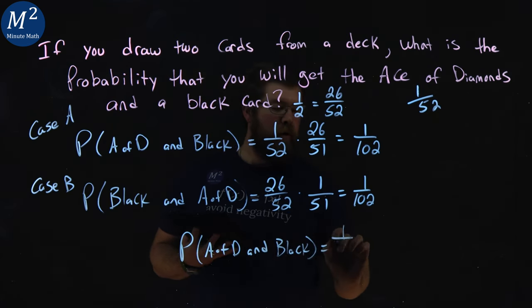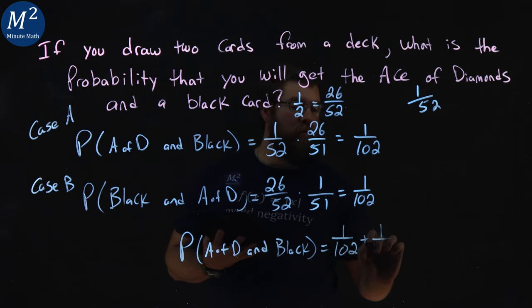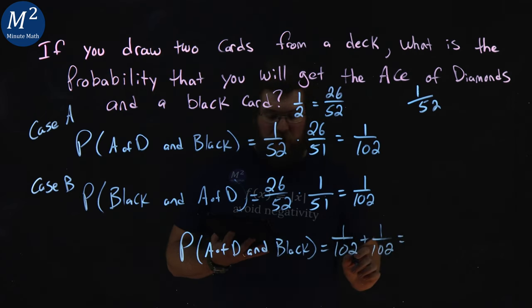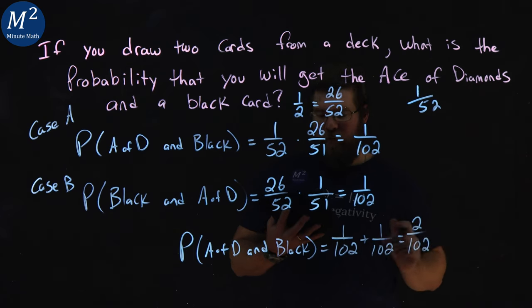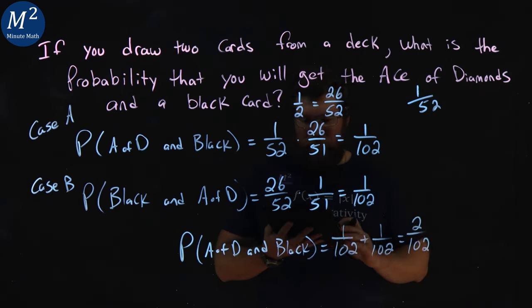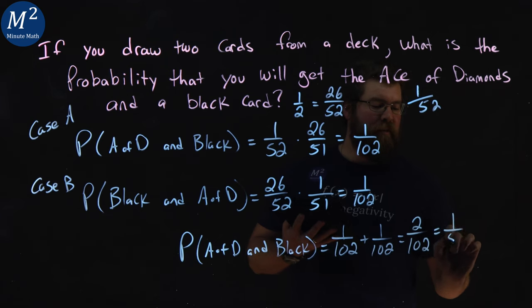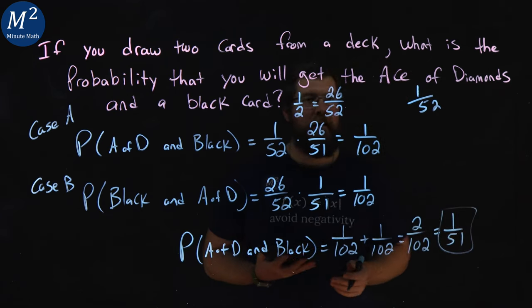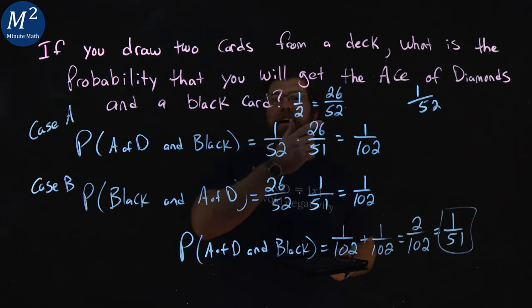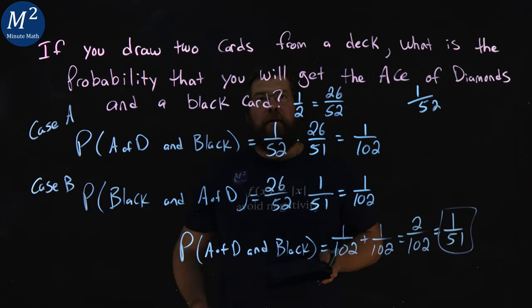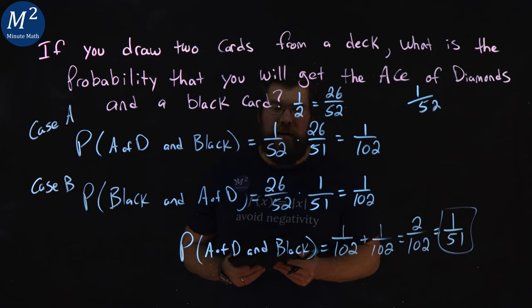is a 1 over 102 plus 1 over 102, which is 2 out of 102, which simplifies to be a 1 out of 51. So, there's a 1 in 51 chance of getting an ace of diamonds and a black card when you draw two cards from the deck.